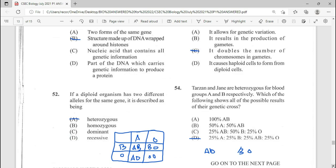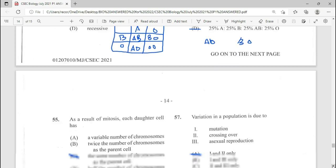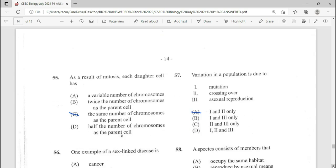54, this is a repeated question. Tarzan and Jane are heterozygous for blood group A and B respectively. Which of the following shows all the possible results of the genetic cross? Answer there is going to be B as is seen on screen.